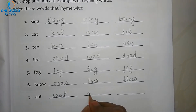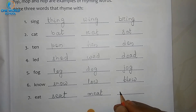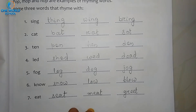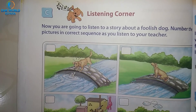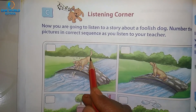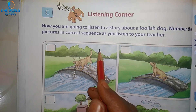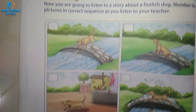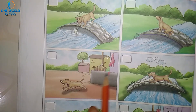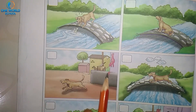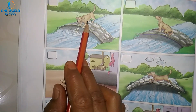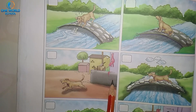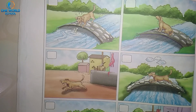This is the listening corner section. We have learned about the story of the tiger and frog. Now here there are many pictures about a story called the foolish dog. You have to look at all the pictures and number them in the correct sequence. Here there is a dog watching a person who is cutting meat, and the dog wants a bone.